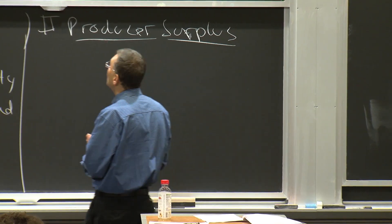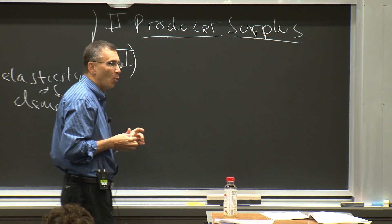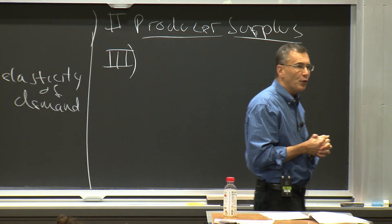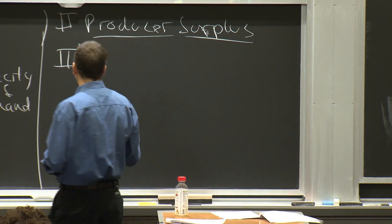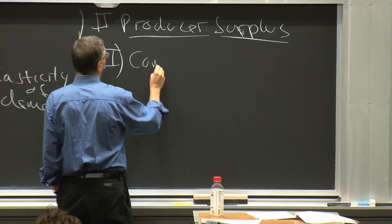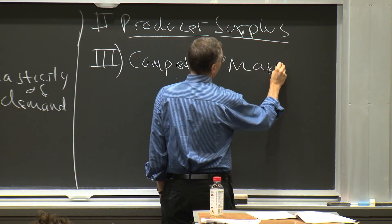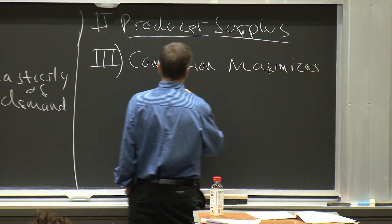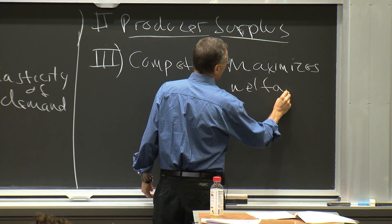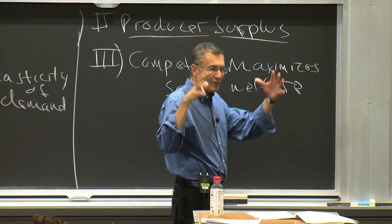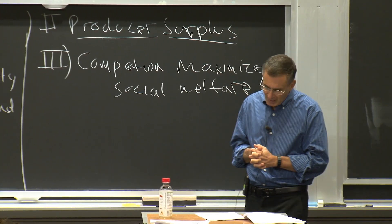Armed with these two concepts, we are prepared to prove what is modestly called the first fundamental theorem of welfare economics, which is that competitive markets maximize social welfare. This is the fundamental theorem that drives microeconomics: competition maximizes social welfare.